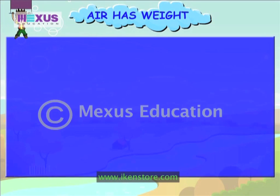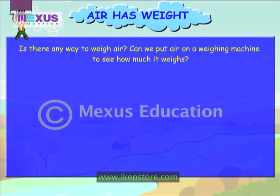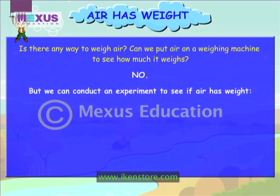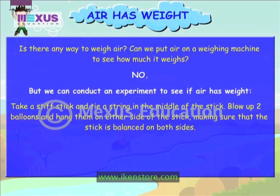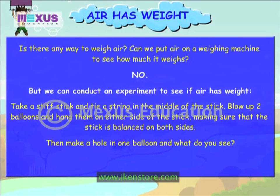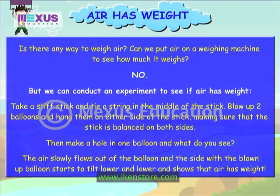Air has weight. Is there any way to weigh air? Can we put air on a weighing machine to see how much it weighs? No. But we can conduct an experiment to see if air has weight. Take a stiff stick and tie a string in the middle of the stick. Blow up two balloons and hang them on either side of the stick, making sure that the stick is balanced on both sides. Then make a hole in one balloon. The air slowly flows out of the balloon and the side with the blown up balloon starts to tilt lower, showing that air has weight.